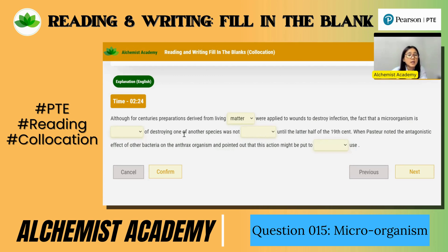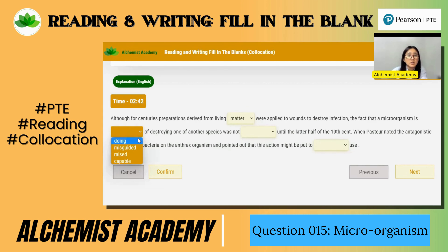Destroying one of another species is blank off. This is the option to accept the species. What to be is: -ing, adjective, past participle. It is doing of destroying. Microorganism is doing of destroying, misguided of destroying, the race of destroying, or capable of destroying.